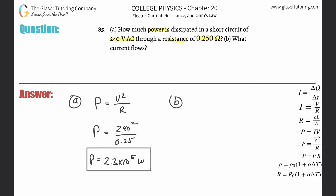Letter B is now asking what current flows. We can simply use another formula for power: P = IV. You can then use the power that you just found of 2.5 times 10 to the fifth, and the voltage of 240, and simply divide the 240 from both sides to find your current. Divide that value by 240, and we get a value of about 960 amps.